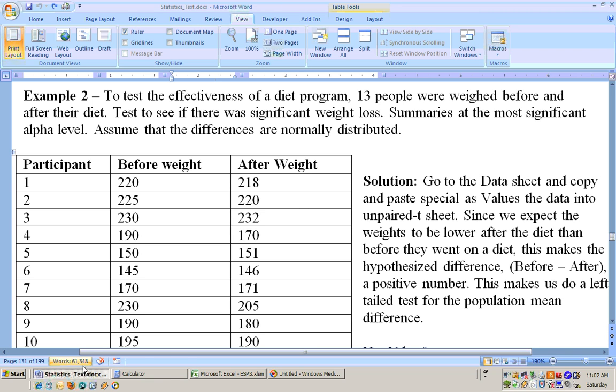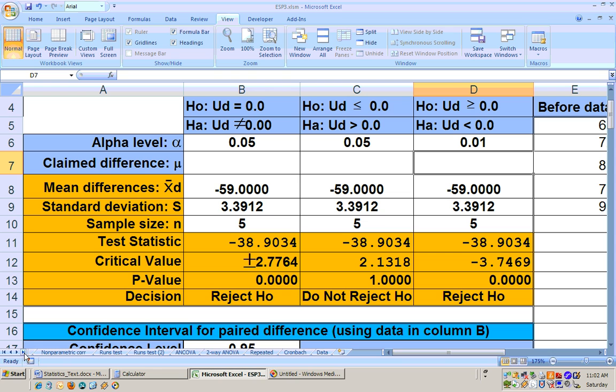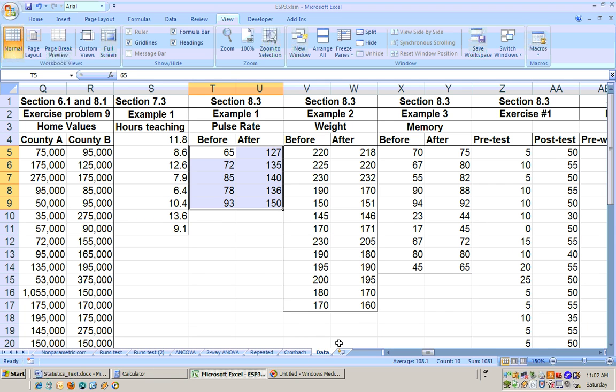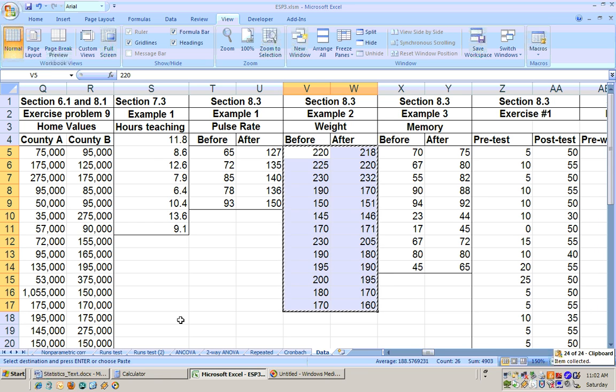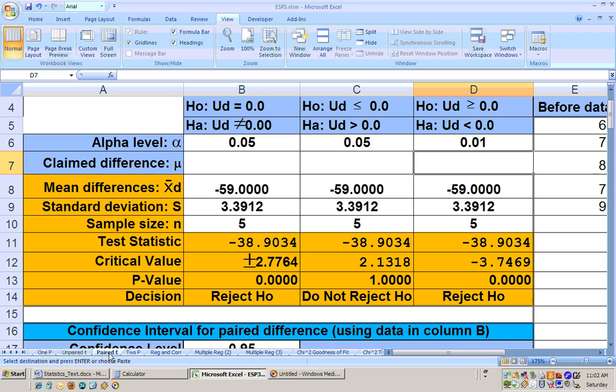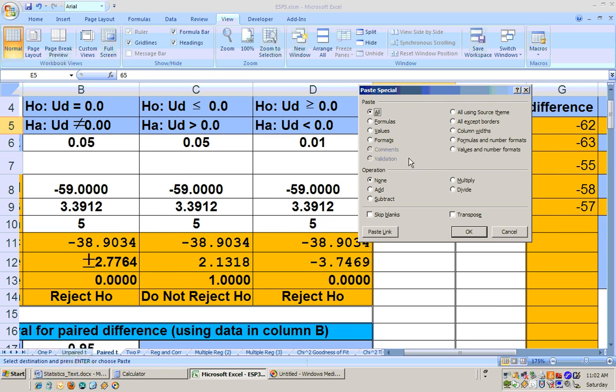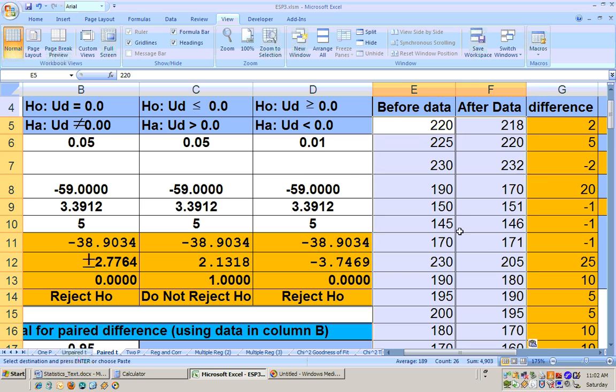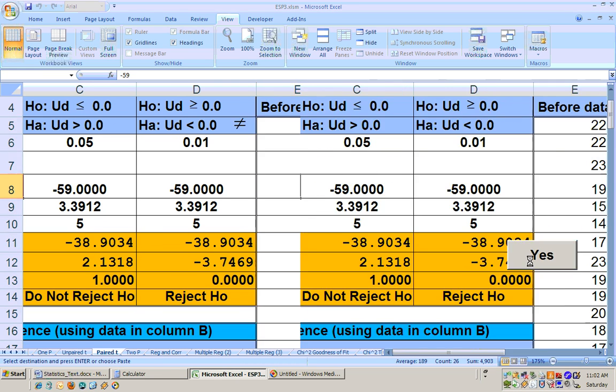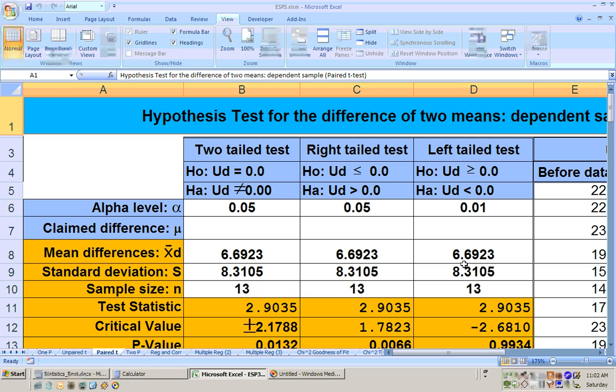Let's go to the data sheet and get this data. And we'll highlight it and copy it. Here it is. That's the same data we had. And we'll copy it. And we'll go to our paired t-test. And here's the paired t-test. And we'll just go right here. Right mouse click and paste special as values. Get that in there. Make sure you don't have any extra data in there. We don't. Click the yes button. Don't forget to do that. We're doing a right-tailed test.